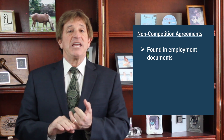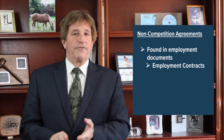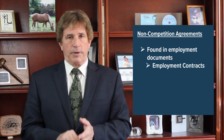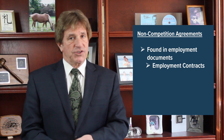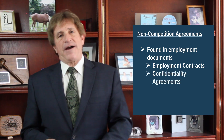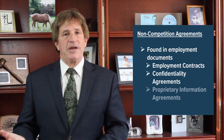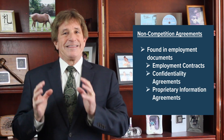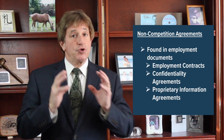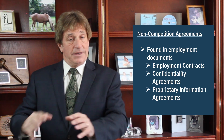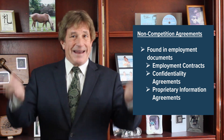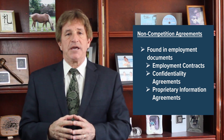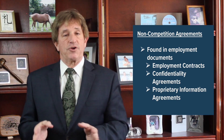They can be found in employment contracts, very often called at-will employment contracts. They can be found in confidentiality agreements and in agreements concerning proprietary information. The covenant itself — the agreement to not compete and not solicit — is the enforceable part, not the name of the agreement you sign, in determining whether or not you're bound by this provision.